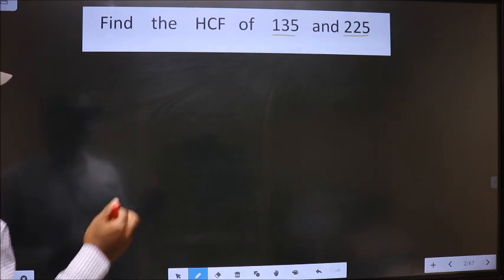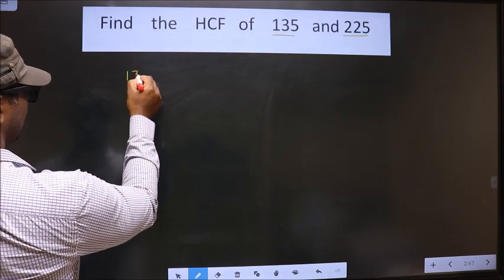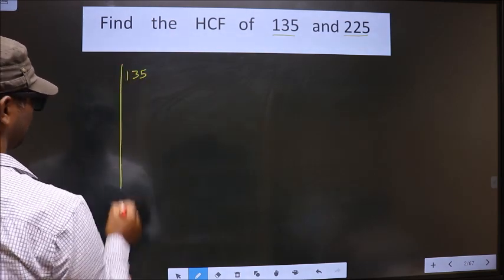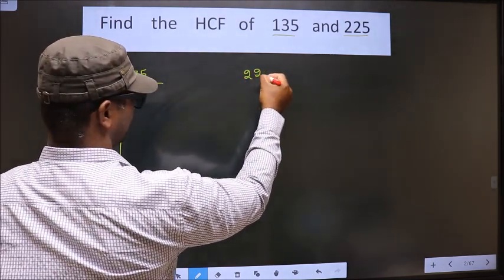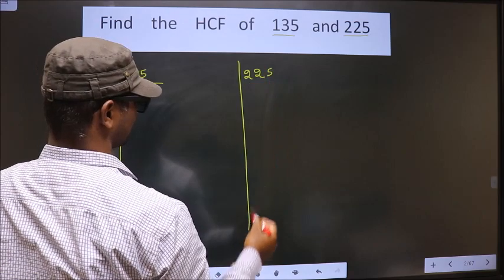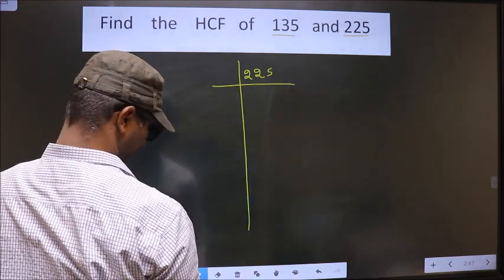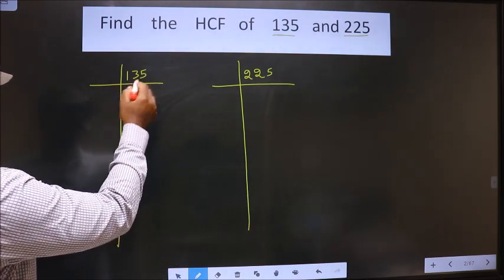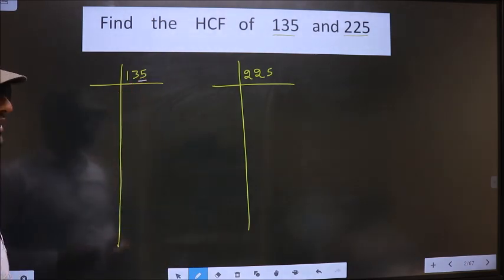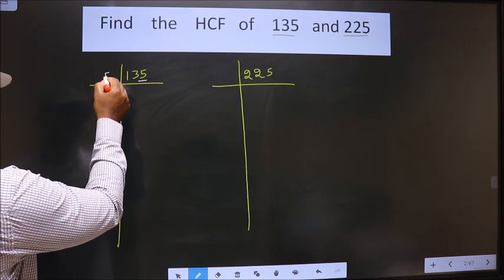That is, 135 and 225. Now, for this number, the last digit is 5, so we take here 5. Now, the first number is 1. 1 is smaller than 5, so we take two numbers, that is 13. So, a number close to 13 in the 5 table is 5 times 2 is 10.